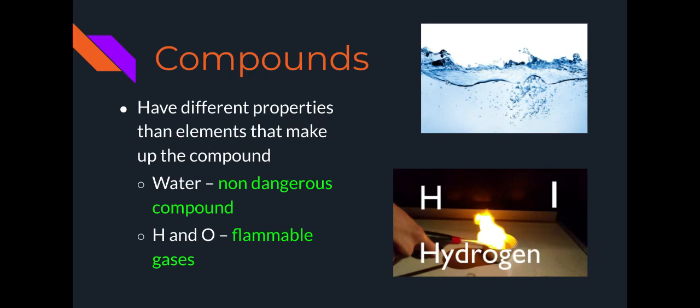So water. Water is a non-dangerous essential compound that every living thing needs in order to survive. Now water is made up of two elements, hydrogen and oxygen, which are both gases, but they happen to be highly flammable gases. But when they react and form water, it takes away those dangerous properties. So that is just to show you that compounds can be very, very different from the elements that make them up.